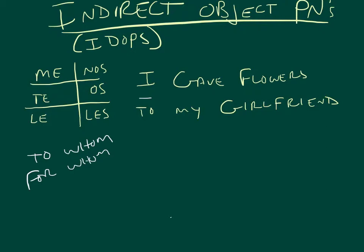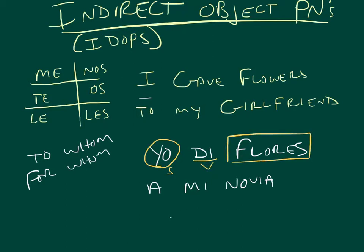Let's start by taking our first sentence there. Yo di flores a mi novia. Okay, diagram the sentence. Here's the subject, yo. The verb, what did I give? Flores, that's the direct object. Who did I give the flowers to? A mi novia. Indirect object.